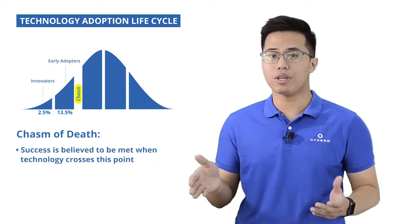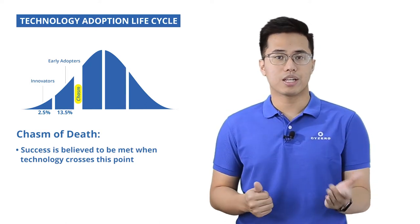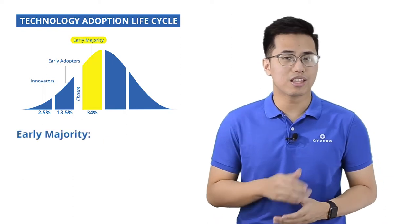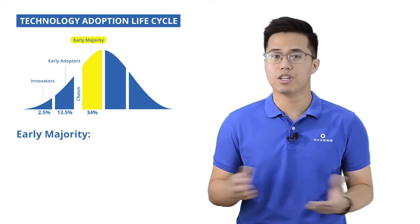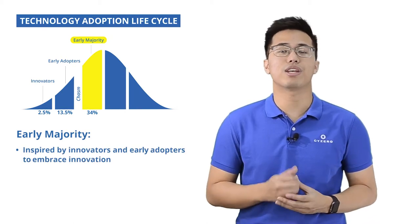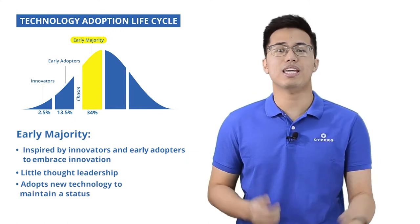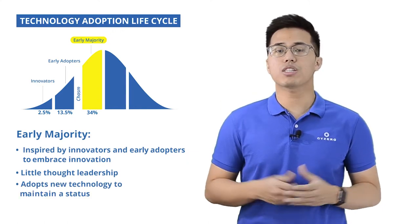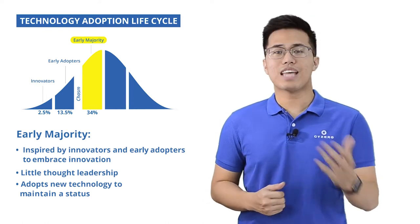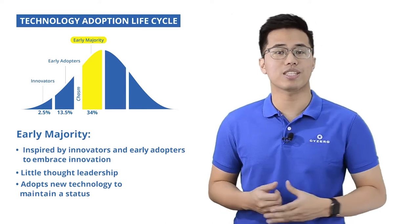When technology crosses this point and is being adopted by the next group of adopters called early majority, the technology is believed to meet success. Now talking about the early majority, this group makes up 34% of the adopters and are inspired by innovators and early adopters to embrace the innovation. There's hardly any thought leadership on this group, but adoption of new tech matters to maintain a decent status. This process also takes a lot longer to happen compared to the first two groups. This happens during the takeoff stage of the S-curve, and they still do rack the benefits before the tech matures.